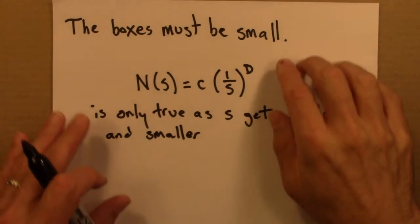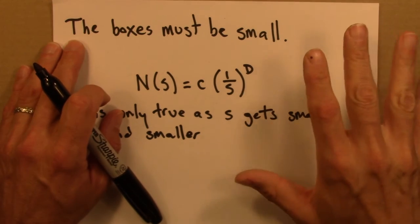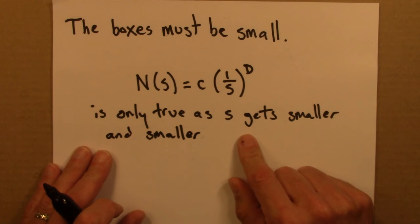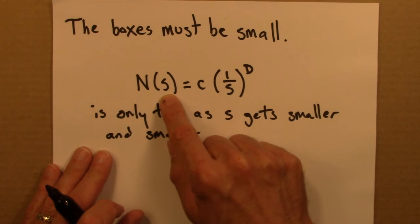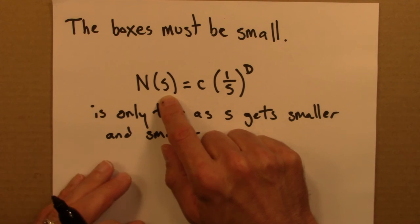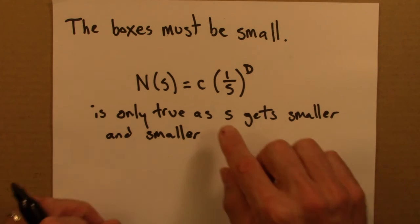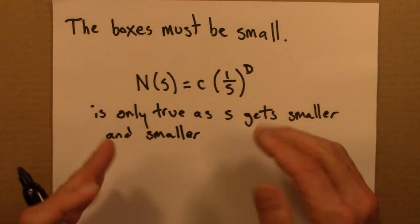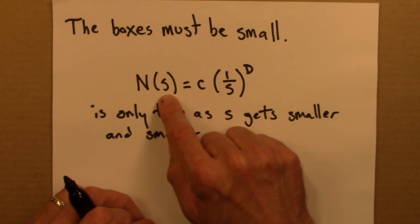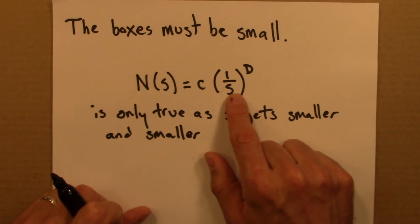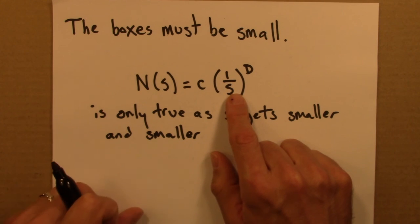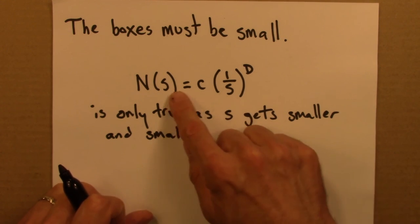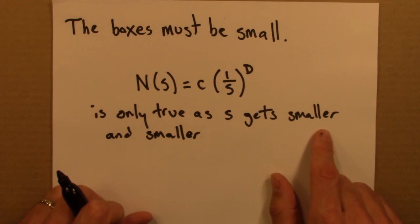To state that again: the key thing is that for the box counting dimension, for shapes that aren't pre-selected like a square, the boxes have to be small. This equation is only true as s gets smaller and smaller. Mathematically, it's only in the limit as s approaches zero that this equation holds. For large s, as we've seen with the circle, it won't be true. So in order to calculate the box counting dimension for circles or other shapes that don't line up with squares exactly, we need to investigate what happens as s gets smaller and smaller — and in the next video we'll do box counting for a circle and see how to work with that constraint.